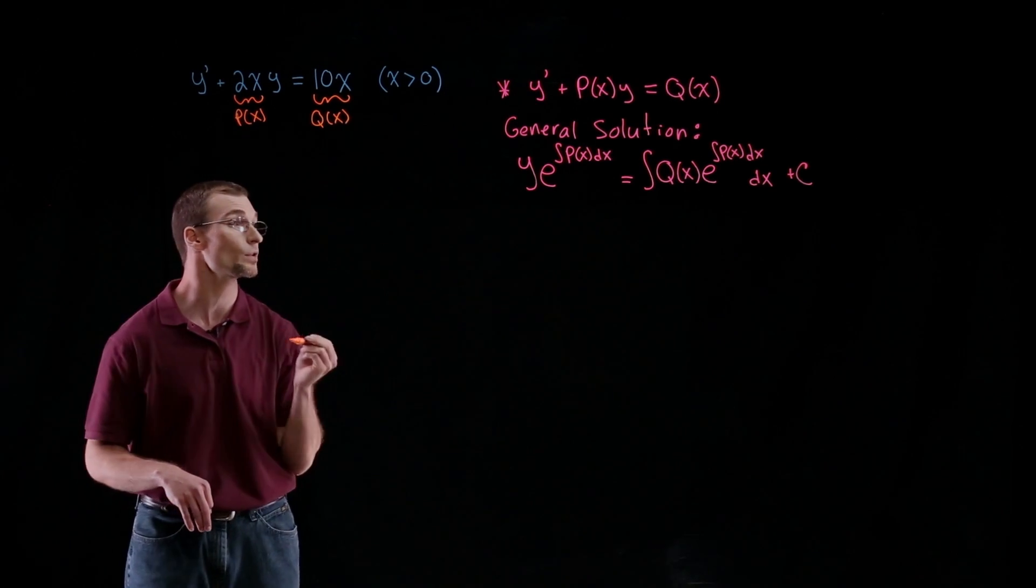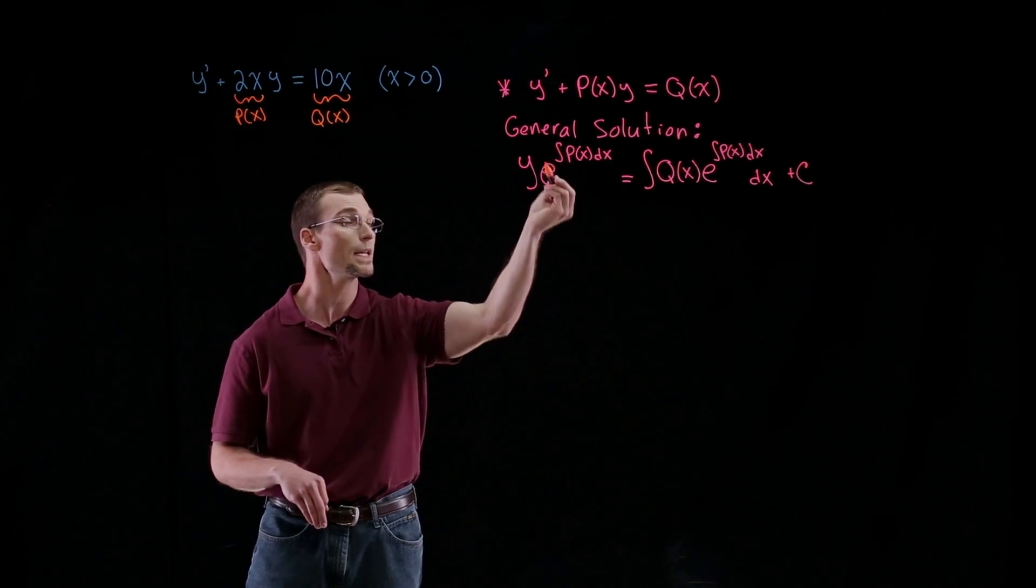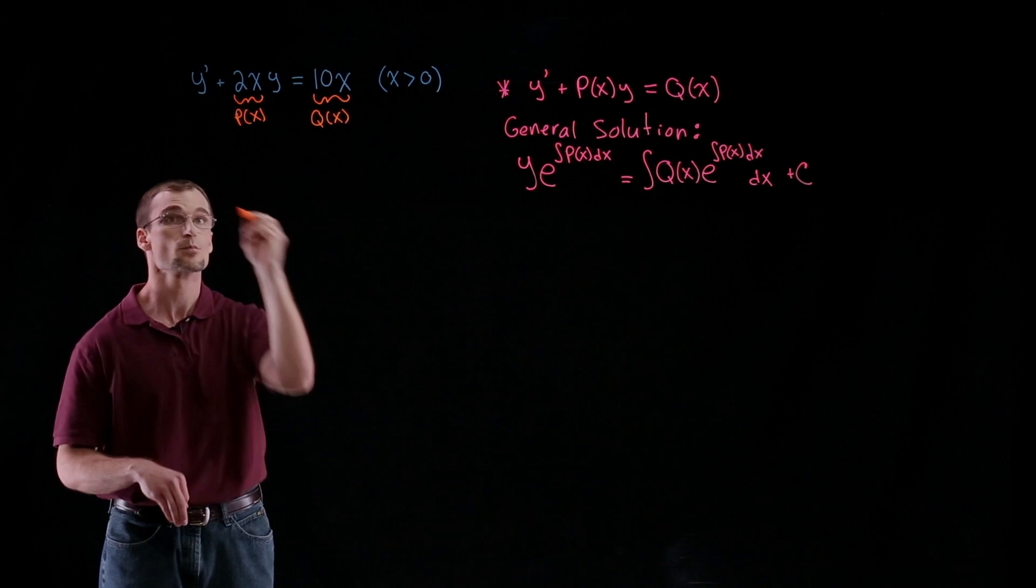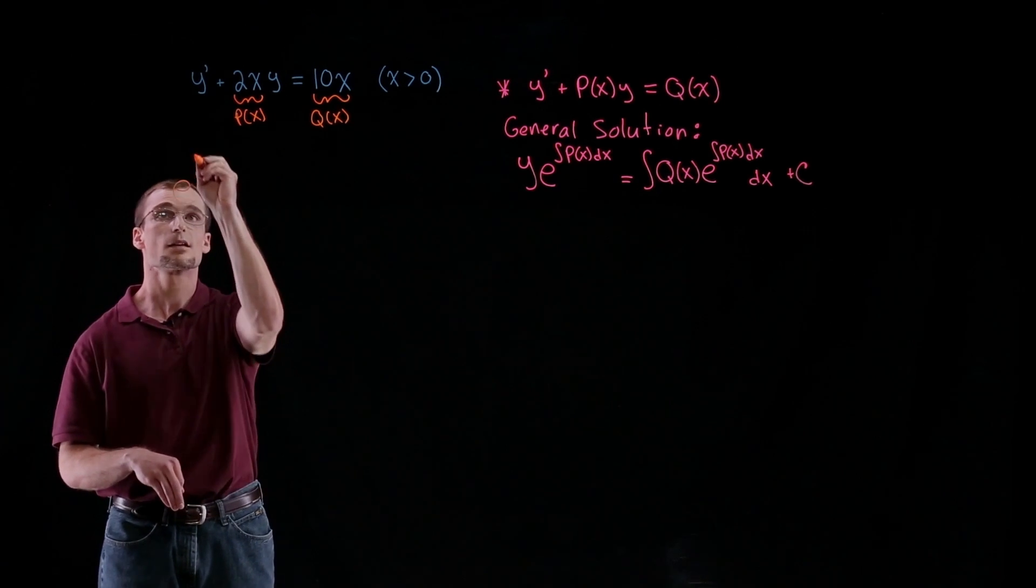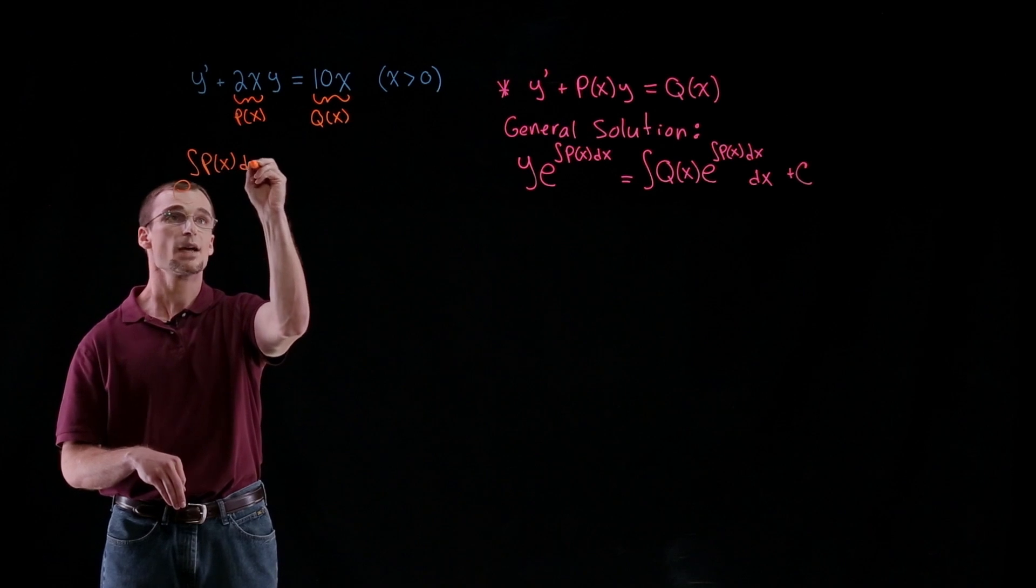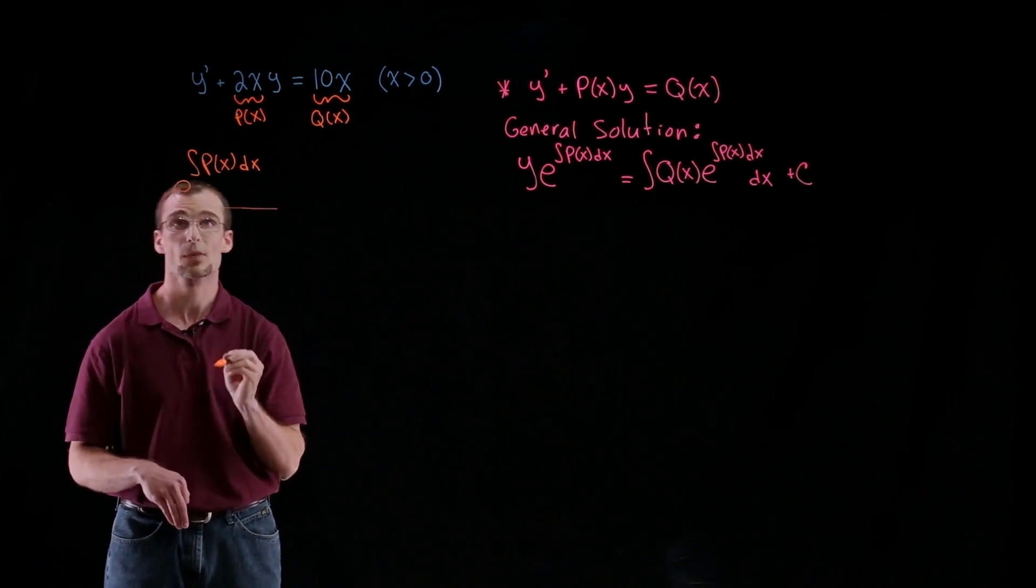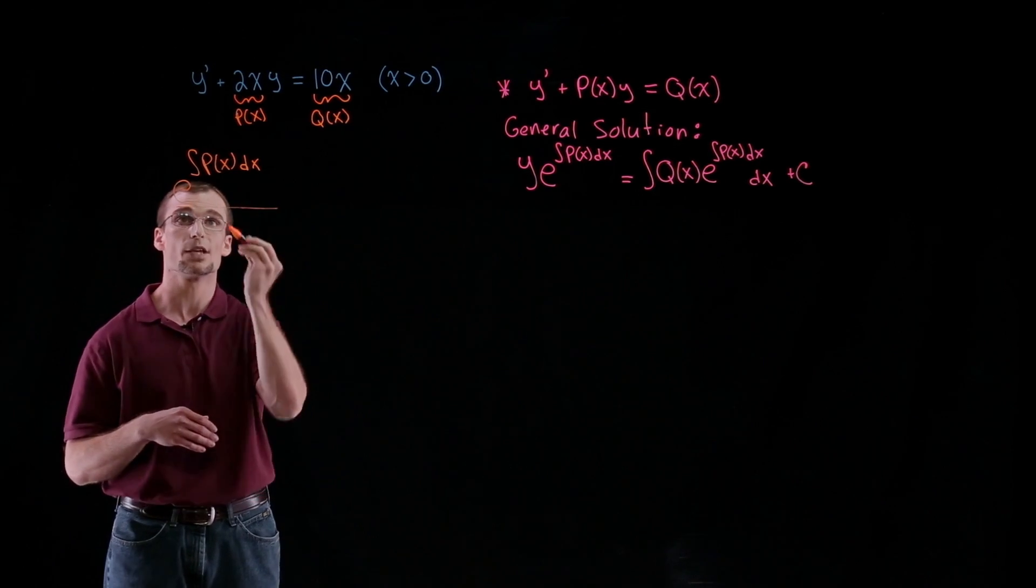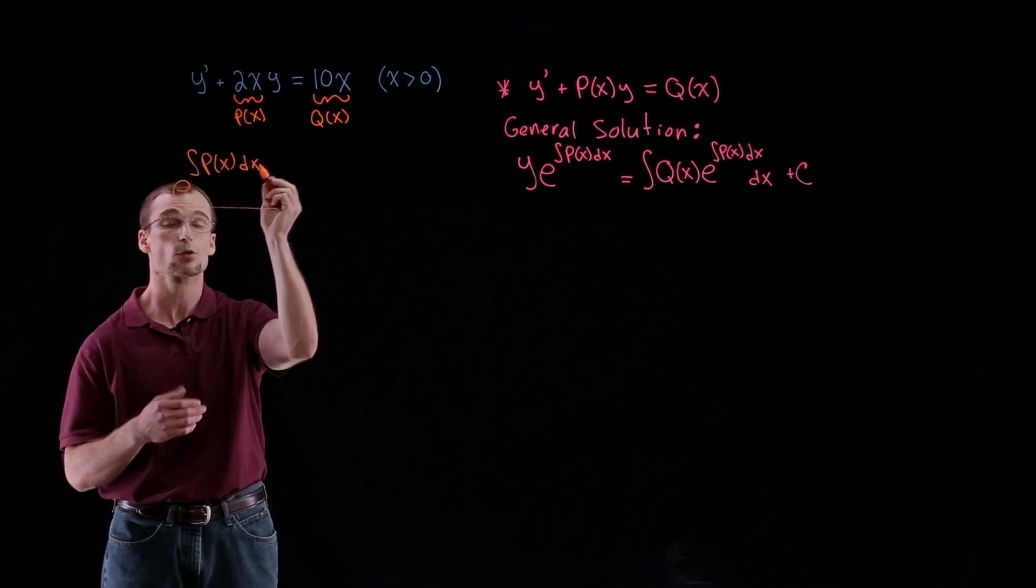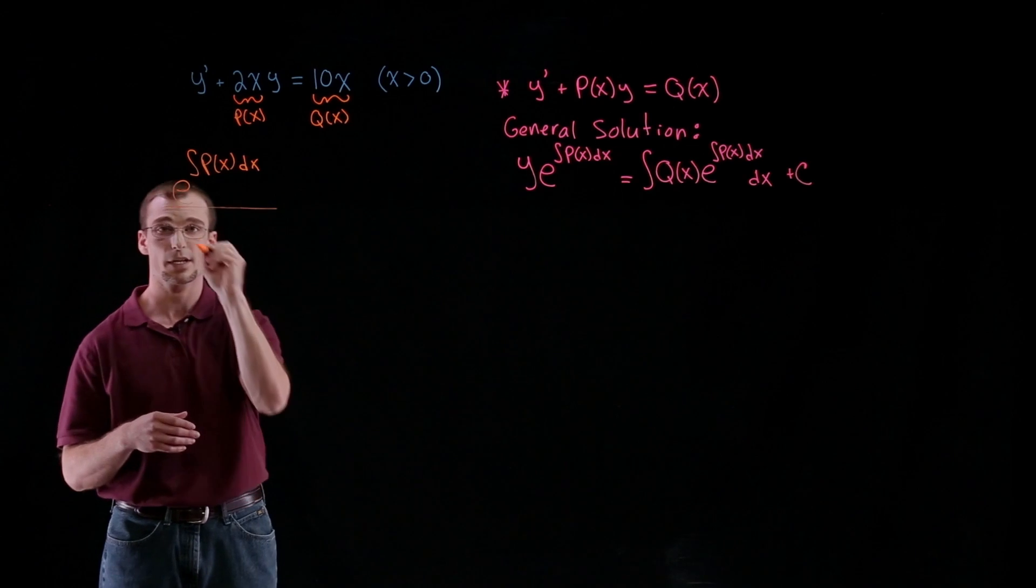So first what we need, looking at our general solution, is we want to develop the left-hand side. So y times e raised to the integral of P(x) times dx. So we'll start there. So we want to find e raised to the integral of this P(x) times dx. All right, so how can we do that? Well, you can do this one of two ways. You could throw everything together and do it that way if you feel comfortable with, but if you want to, you can just find the integral first and then put that on top as an exponent. That's how we'll get started here.